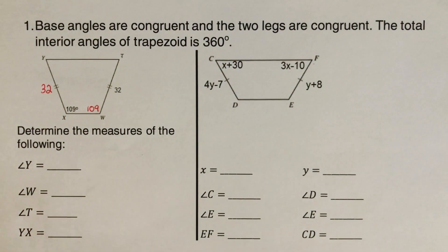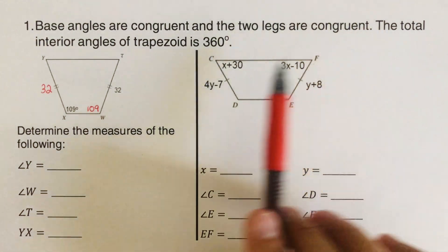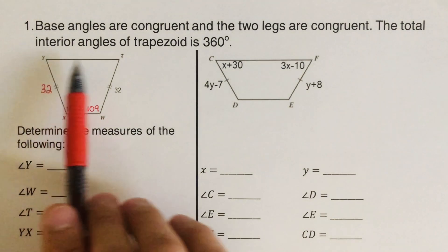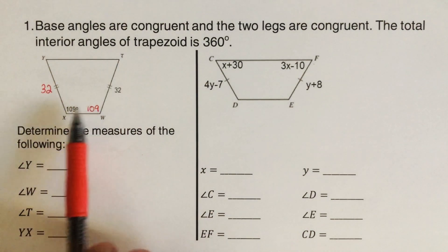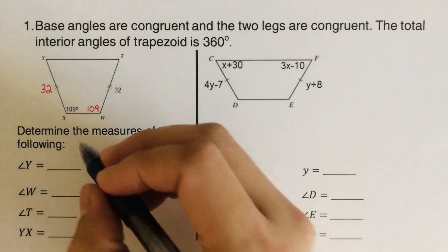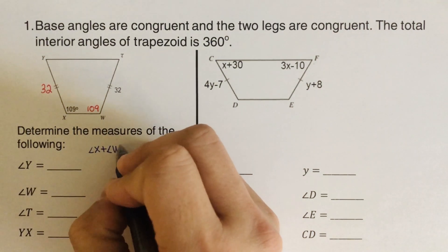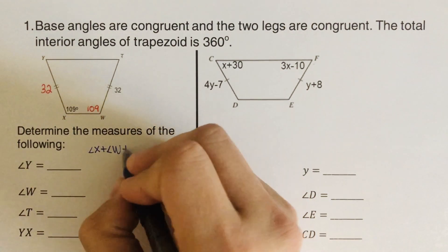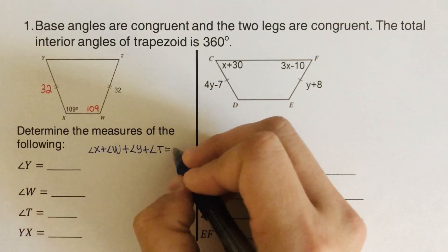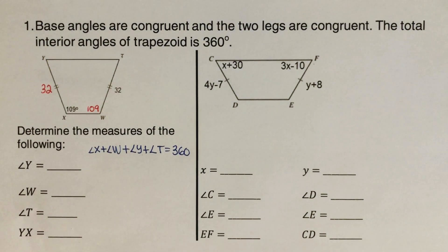Now, the total interior angles of a trapezoid equal 360. These two are equal, and these two are equal, so we set up the equation: angle X plus angle W plus angle Y plus angle T equals 360.